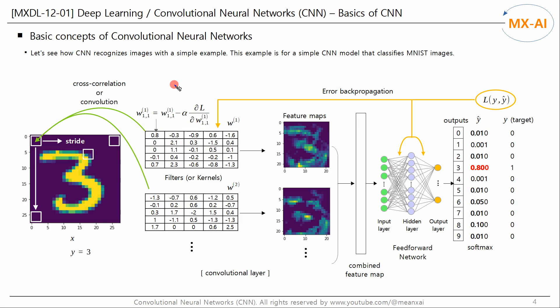Now let's look at the basic concepts of convolutional neural networks, and see how CNN recognizes images with a simple example. This example is for a simple CNN model that classifies MNIST images. The CNN scans an input image using multiple filters, known as kernels, to extract complex visual patterns from that image.